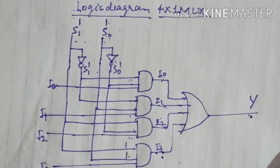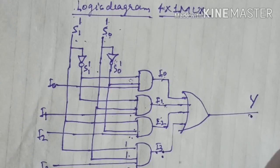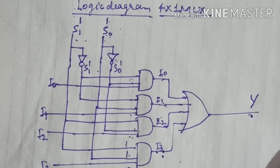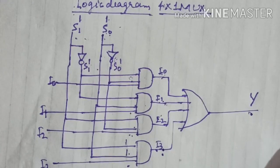Toh yeh multiplexer bahut important circuit hota hai. Jab hum bade bade circuits banate hain — jaise registers banate hain, counters banate hain — jahan many-to-one operation perform karna hota hai, yani many options mein se koi ek option select karna hota hai, wahan hum multiplexer lagate hain. Universal shift register mein bhi multiplexers ka frequently use hota hai. That's why multiplexer is a very very important combinational circuit of digital electronics.